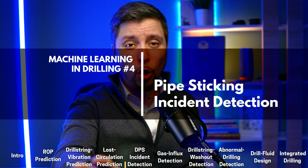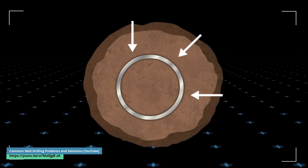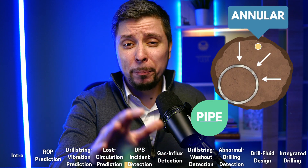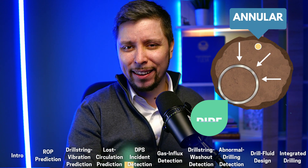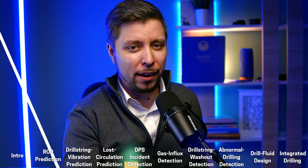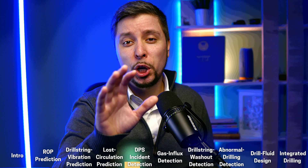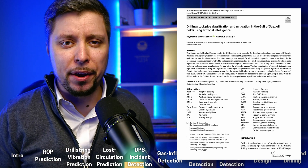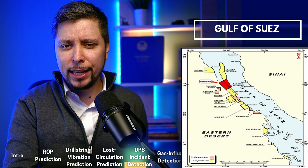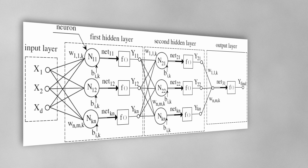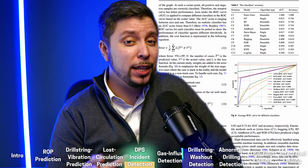Next is pipe-sticking incident detection. The likelihood of successfully retrieving a stuck pipe depends on the drilling team's ability to respond quickly and properly. Costly tools and equipment may be lost if a wrong or late response is taken. In a research paper by Hatem published in 2020, they used drilling data from the Gulf of Suez wells as a field dataset. Out of 12 machine learning methods tested, the most reliable algorithm was extremely randomized trees, achieving 100% accuracy on the testing dataset.